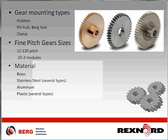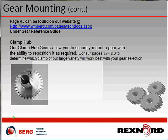For gear mounting reference, page K5 on our website has a gear reference guide with full information on how clamp hubs are attached and how assorted clamps are used. Consult pages I-9 to I-13 to determine which clamp will work best with your gear selection. When choosing a clamp gear, make sure you're selecting based on the OD of the clamp hub lobes, not the bore of the shaft, or the clamp will be too small.